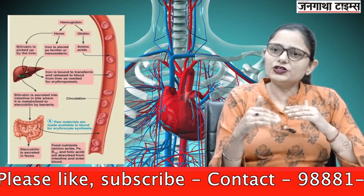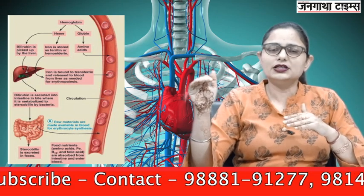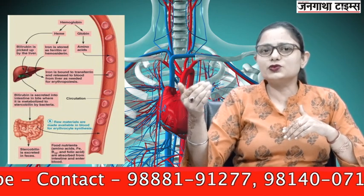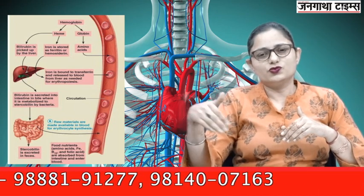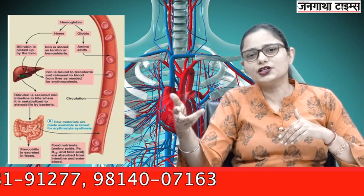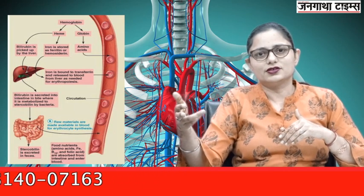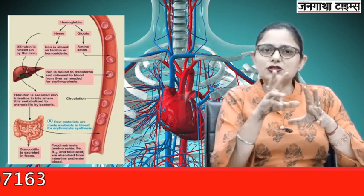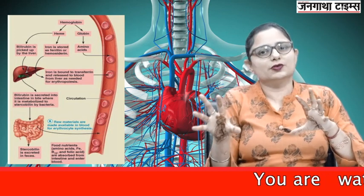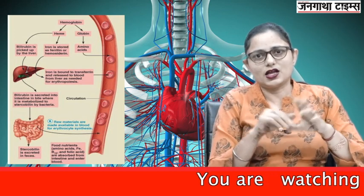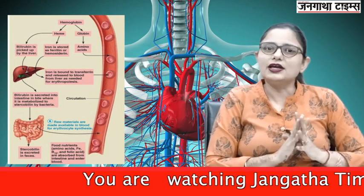Some stercobilin is reabsorbed into the blood and converted to urobilinogen, which is excreted in urine. This is the fate of the RBC and how the life cycle of the RBC ends.